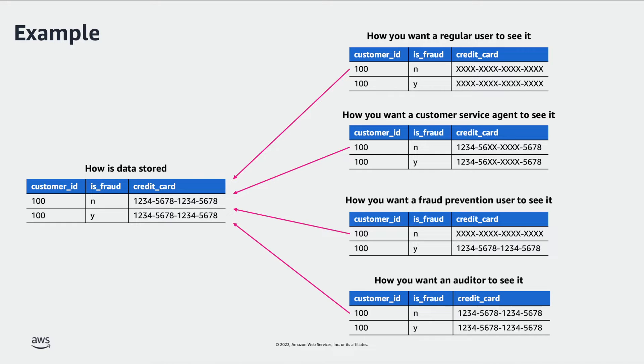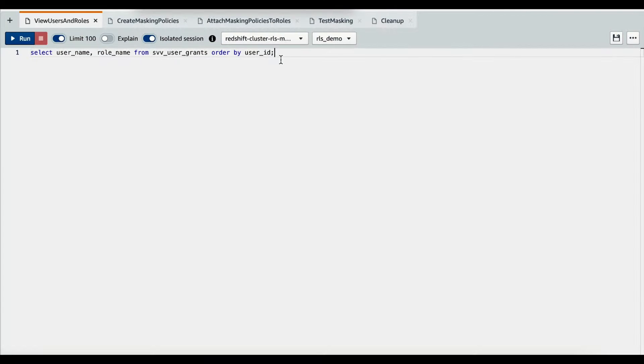When auditors query this table, you want them to see the full credit card number for all rows. Let's see a demo on how this dynamic data masking use case can be implemented in Amazon Redshift. I'm using Amazon Redshift's Query Editor V2 for the demo. I have pre-created the users and roles required.